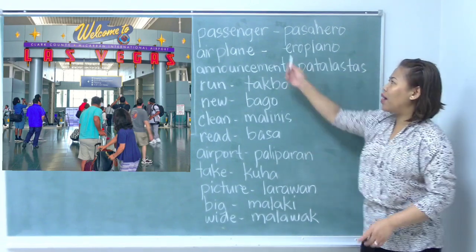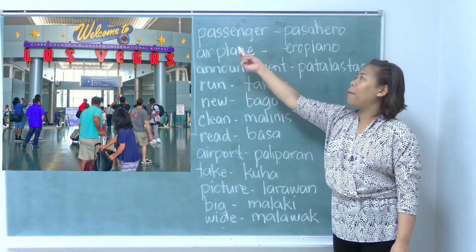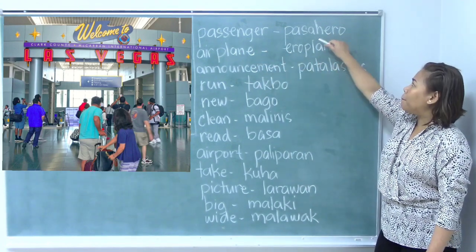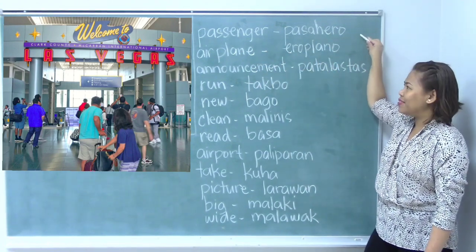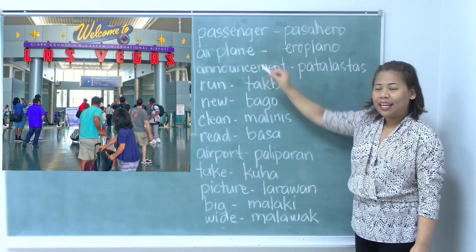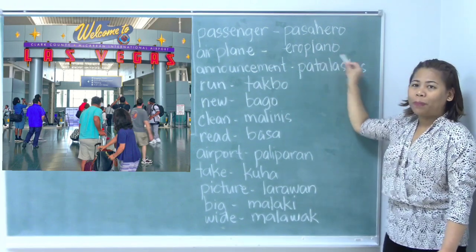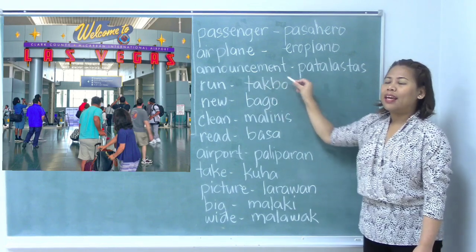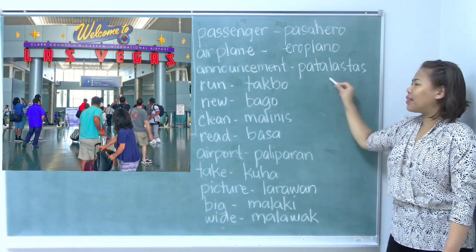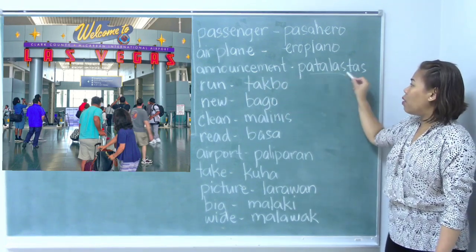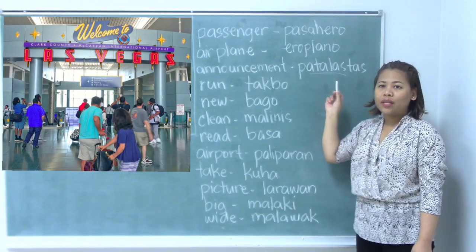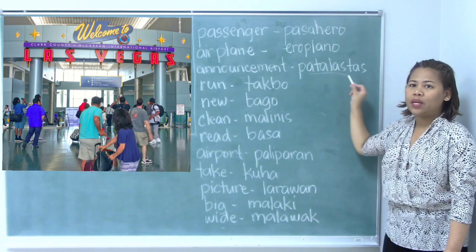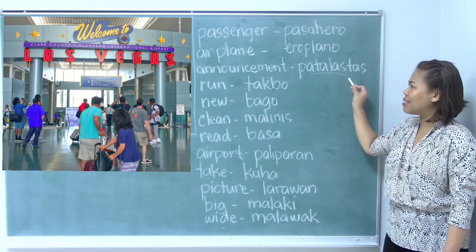So the first vocabulary word: passenger. Passenger in Filipino is pasahero. Airplane in Filipino is aeroplano. Announcement is patalastas — though we also use patalastas when we mean advertisement, but for announcement we use the same word, patalastas.